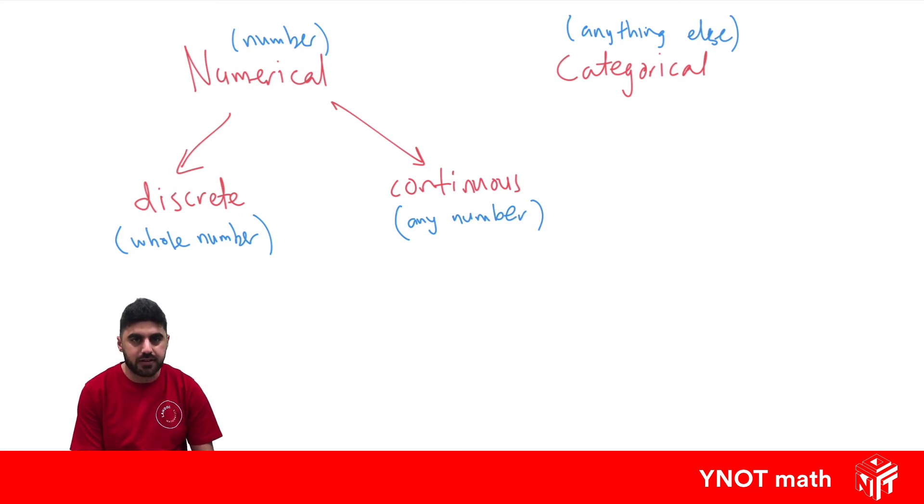And categorical is just anything that's not a number. So your eye color or your favorite kind of music or anything else you can think of.